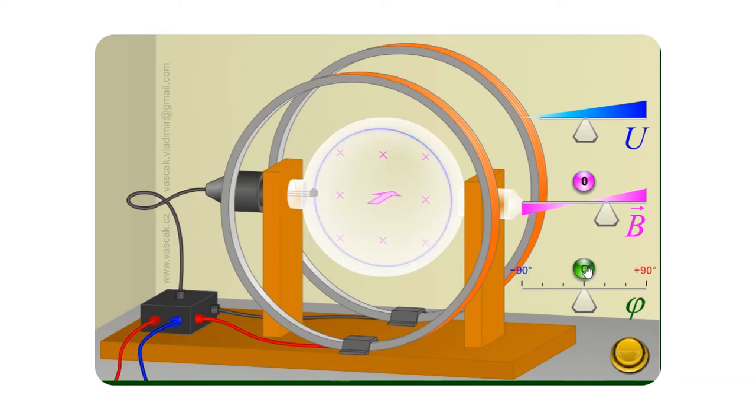We learnt that if the charged particle is projected perpendicular to the magnetic field, then it experiences the maximum force and it will be moved in a circular path. And the Lorentz force QVB will provide the centripetal force required for it.